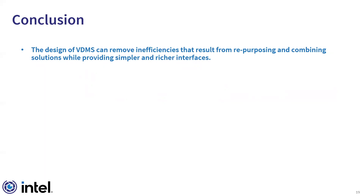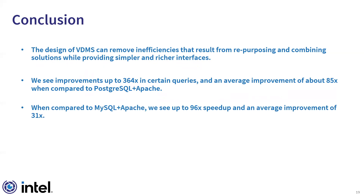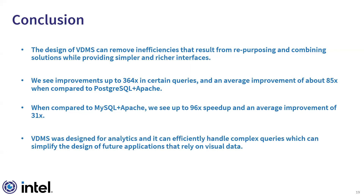For evaluation, we see how VDMS compares against a combination of industry standard systems, all of which are needed to replicate only a portion of VDMS's functionality. Compared to PostgreSQL, VDMS provides improvements of up to 364x in certain queries and an average improvement of about 85x. Compared to MySQL, VDMS provides an improvement of up to 96x in certain queries and an average improvement of 31x. VDMS was designed with analytics in mind: it simplifies the process of data preparation and data access, and provides functionalities non-existent in alternative options. VDMS can help simplify the design of future applications that rely on visual data by efficiently handling complex queries. Thank you for attending.